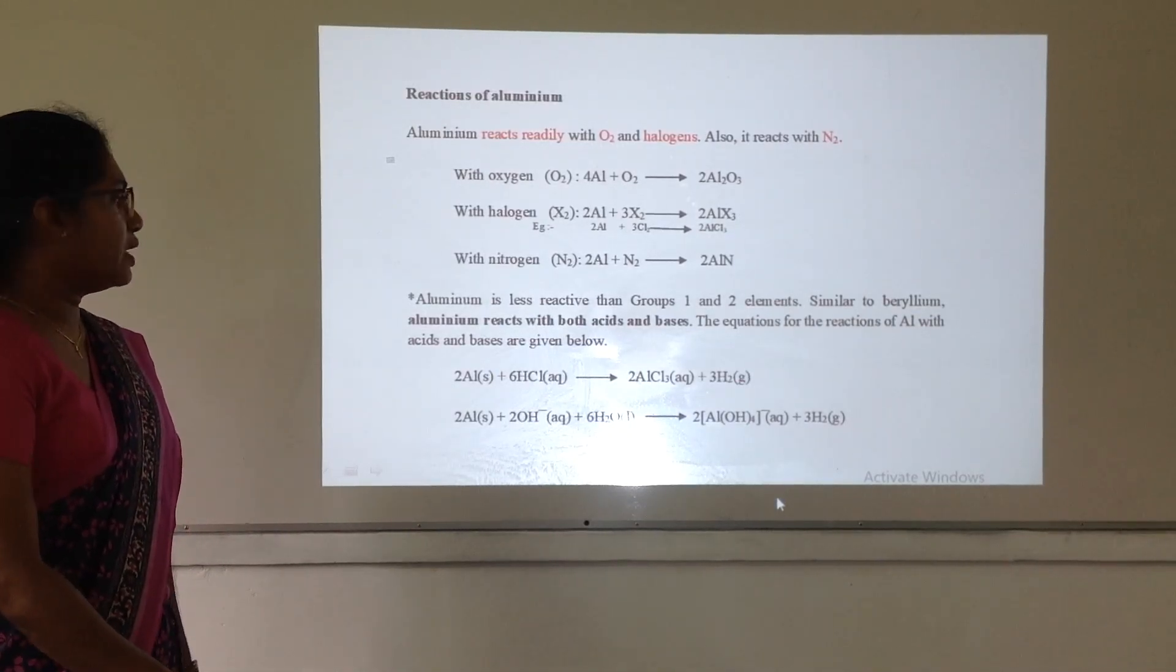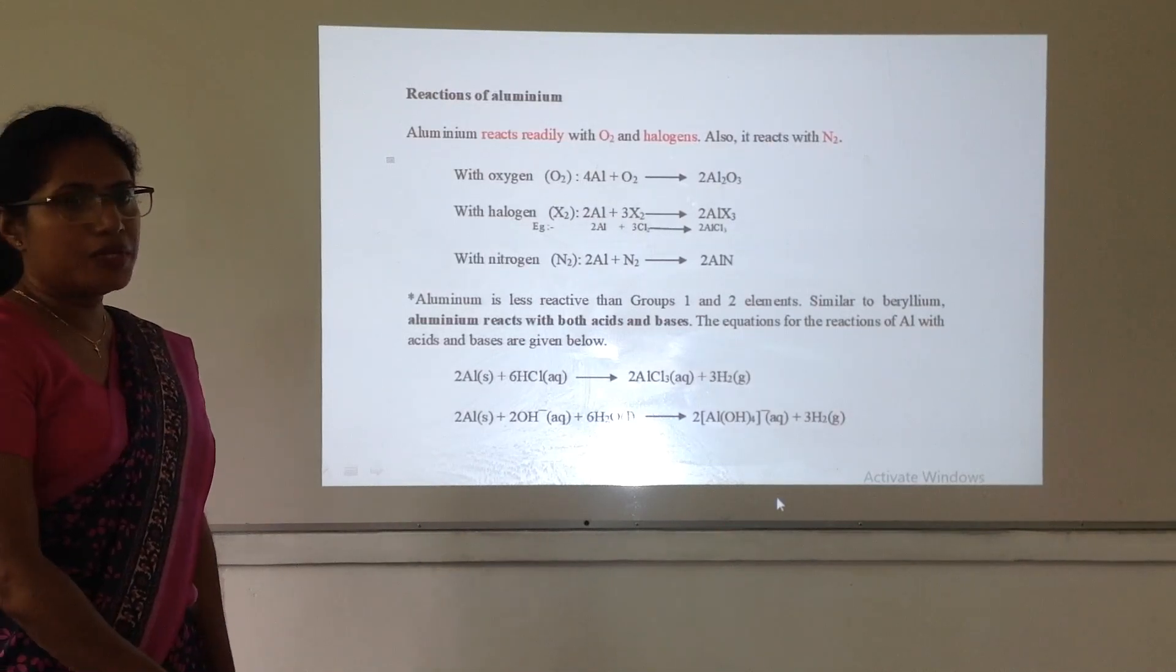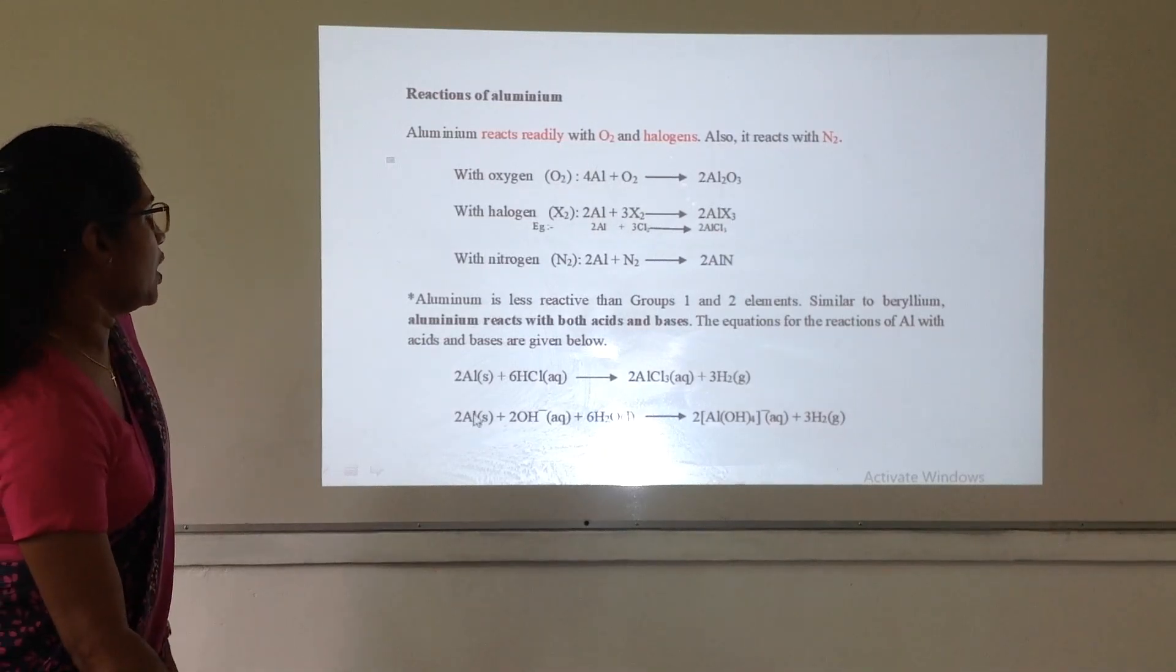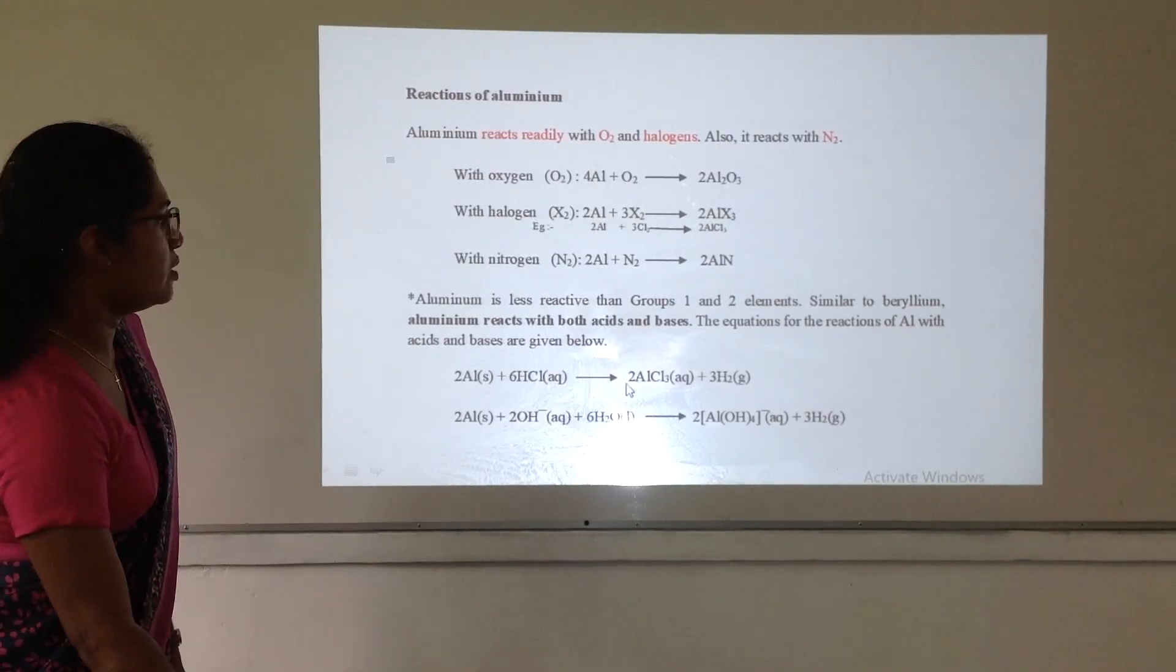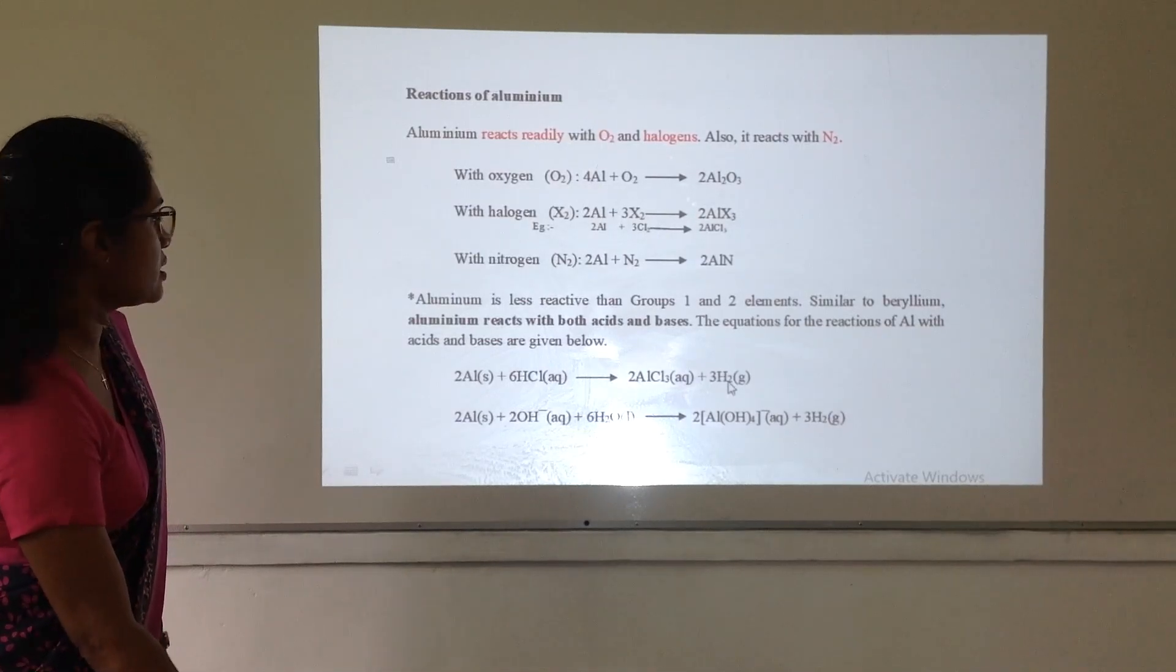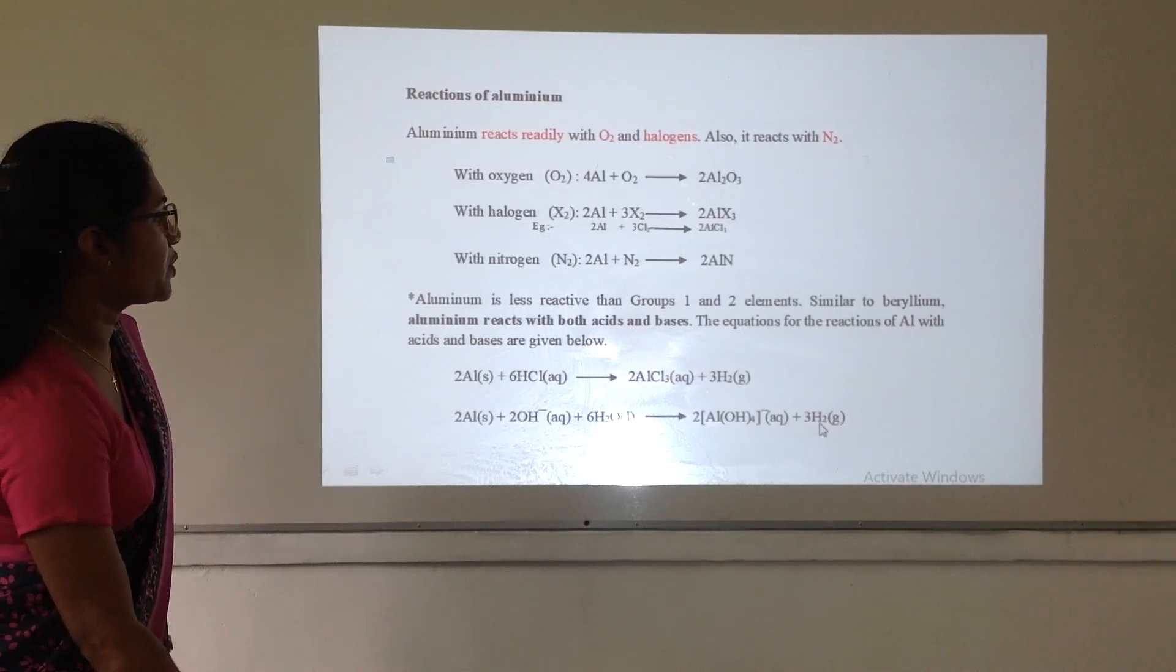Similar to beryllium, aluminium reacts with acids and bases. Aluminium reacts with acid and forms hydrogen gas. And also reacts with bases and forms hydrogen gas.